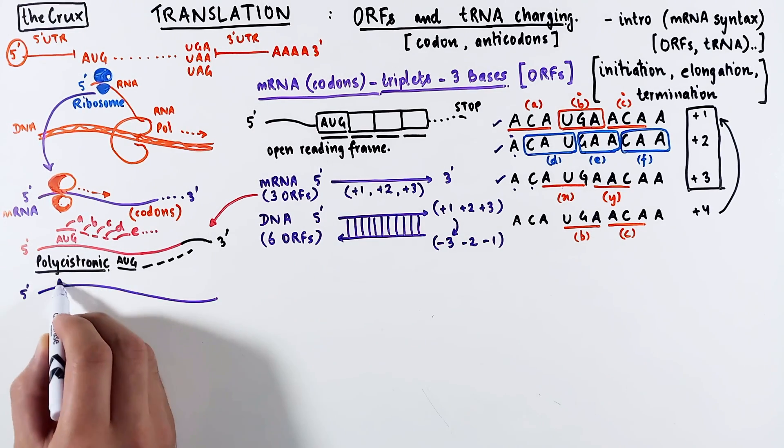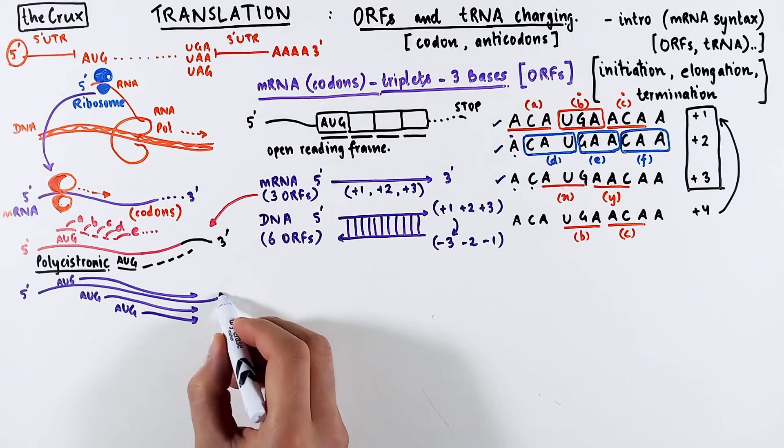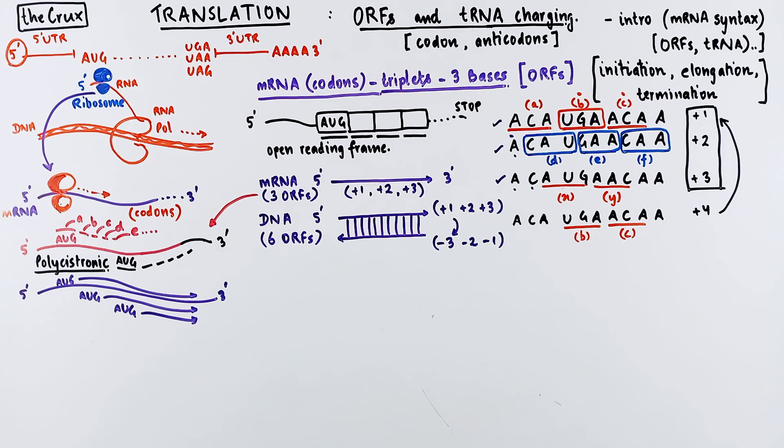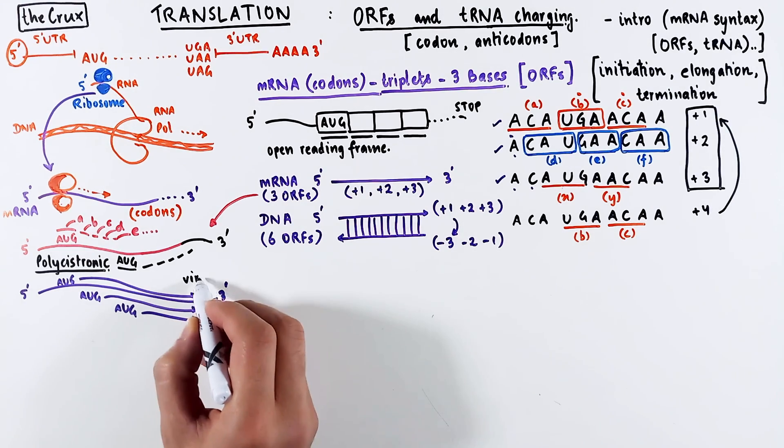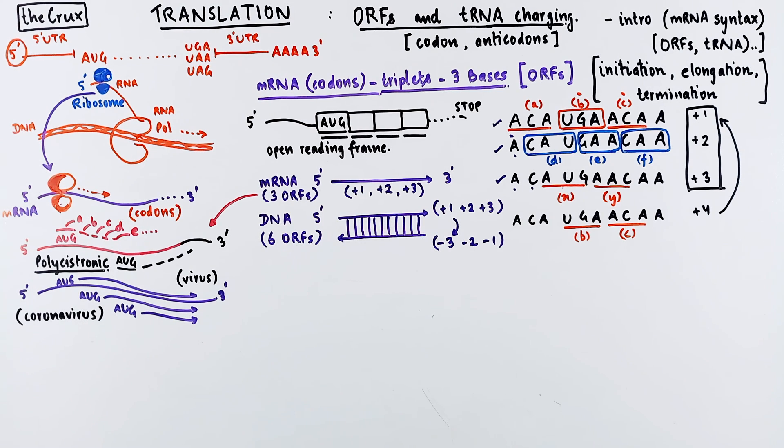Here's another example where multiple open reading frames get interesting. In viruses, for example, you can have multiple open reading frames that overlap with each other. So the same mRNA can now give rise to multiple proteins. And this is the case with coronavirus RNA genome. Overlapping open reading frames in the same mRNA also increase the amount of information that can be stored to make proteins.